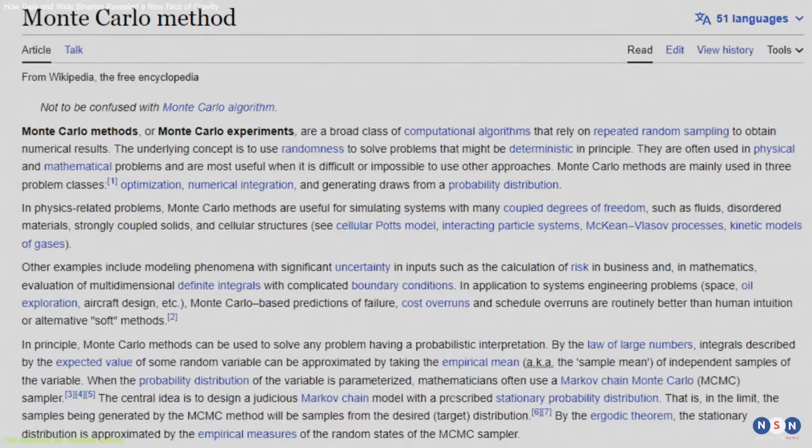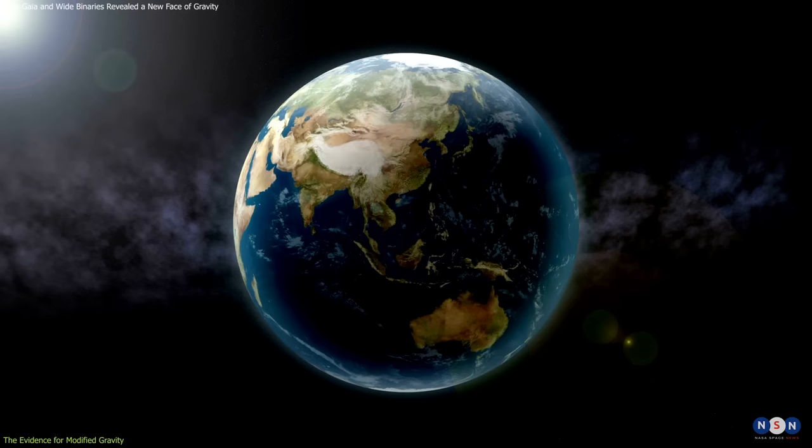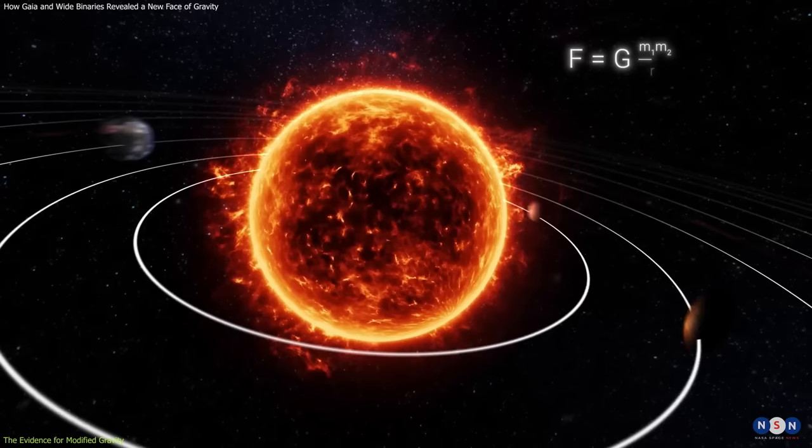This method accounts for uncertainties and biases in the data by generating random samples from a probability distribution. The study found that when the binary stars have accelerations lower than about one nanometer per second squared, which is very small compared to the Earth's gravity,